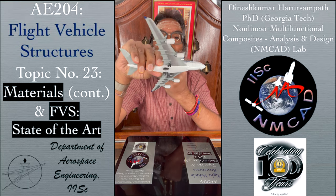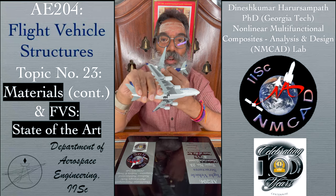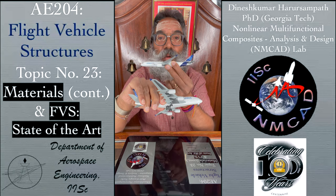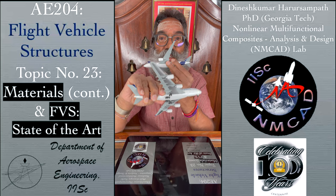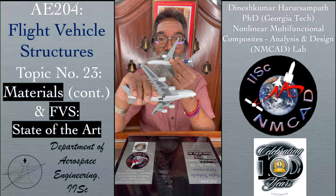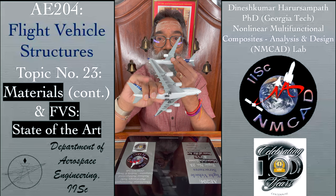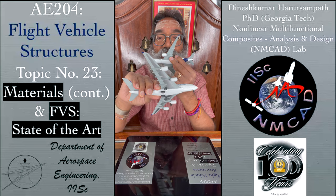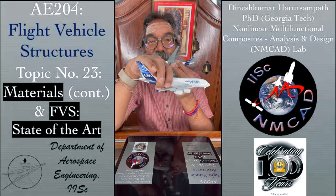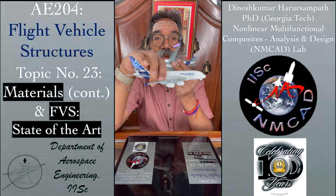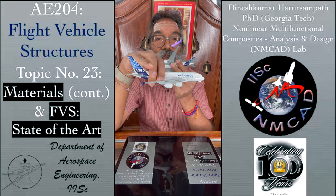What do you think this other aircraft is? It's another Airbus aircraft, 1:400 scale, and it's much larger than the A350. It's the A380 — you can see it written on the vertical tail as well as on the fuselage body.